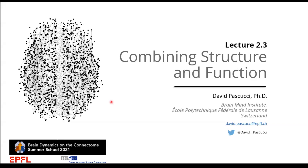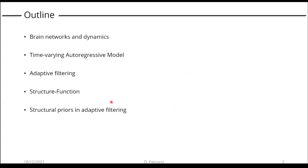My name is David Pascucci, and I was working at the Perceptual Networks group of Heiss Plomp, and I'm now at the EPFL in Lausanne. It's my pleasure to take over from the last talk, going a bit more into details after the excellent introduction about dynamic and directed connectivity and the Granger causality framework. I will spend some time discussing the structure and function relationship and presenting a way to combine information from structure and function to achieve a more biologically plausible measure of dynamic connectivity.